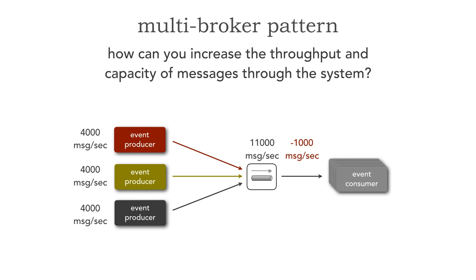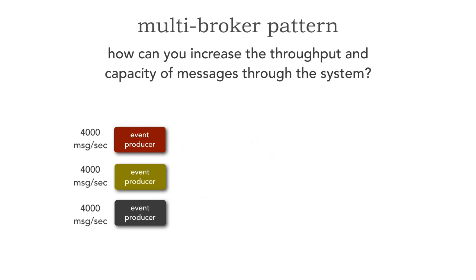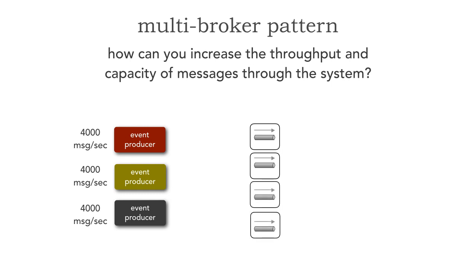Let me show you a technique using the multi-broker pattern to significantly increase this capacity. We keep the same scenario — these event producers are still producing four thousand messages a second — but rather than one broker and one queue, we have multiple brokers. For example, I'm going to spin up four instances of the broker with four different queues.